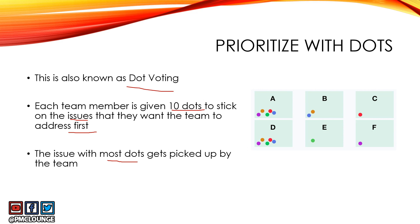Whichever issue gets the most number of dots is something that will be picked up by the team. So as you can see, issue A and B have five dots each, so one of these can be picked up by the team to address first. This is the second tool in this step of retrospective meeting, where you are basically generating insights and deciding which issue to tackle first.